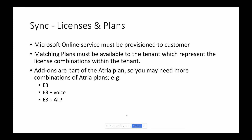For licenses and plans, the Microsoft Online service must be provisioned to the customer for licenses and plans to be synchronized. Matching plans must be available to the tenant representing the license combinations. You also need a plan with no licenses for users who are just Azure AD users with no licenses. Note that add-ons are part of the Atria plan, so you may need more plan combinations than you might think. For example, if you have E3, E3 plus Voice, and E3 plus ATP, those would all be separate plans within Atria.